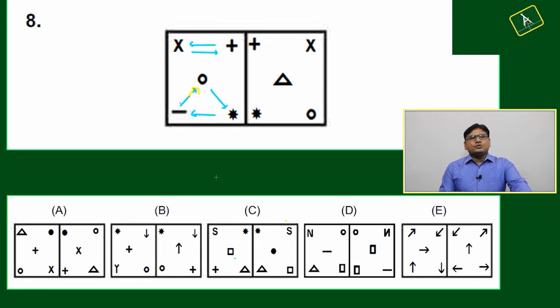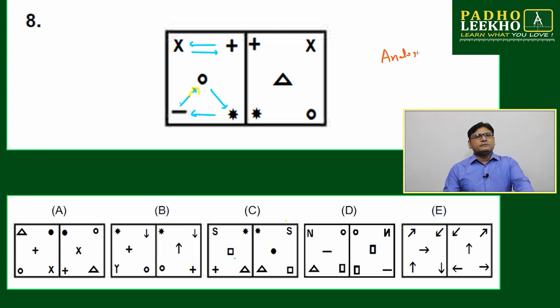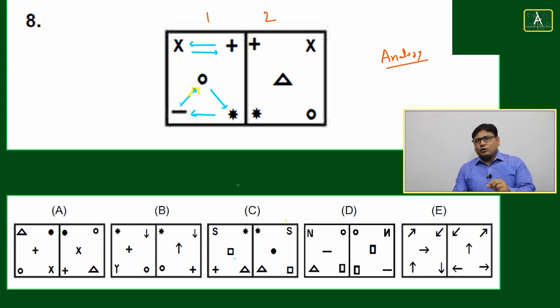Now we'll come to question number eight, which is also based on analogy where one of the pair has given images number one and two. They are following a certain pattern of shifting of the element or maybe movement of the element.